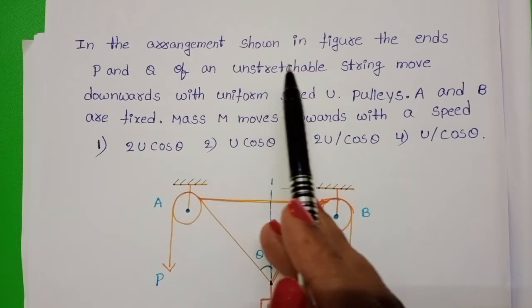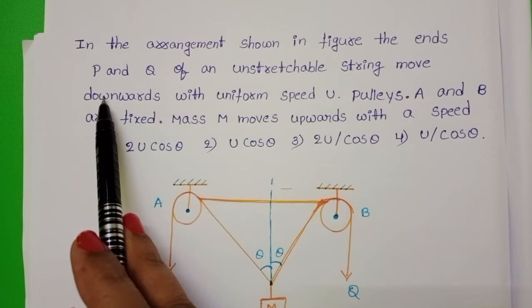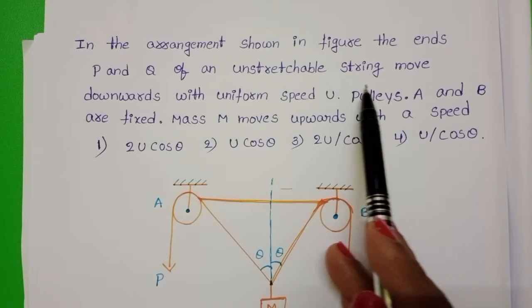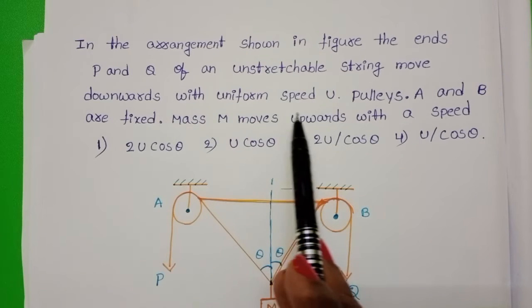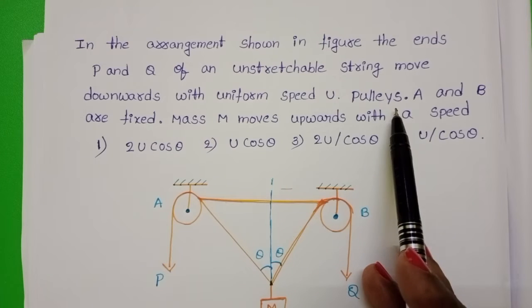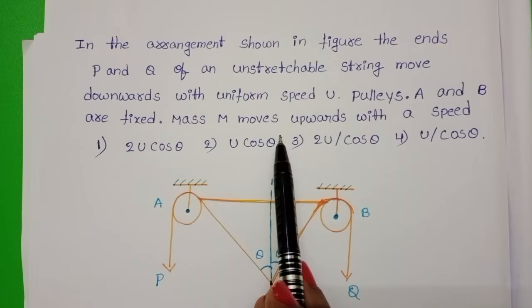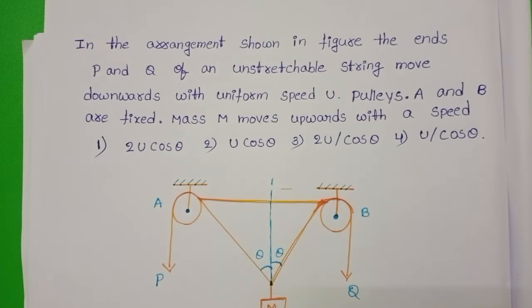In the arrangement shown in figure, the ends P and Q of an unstretchable string move downwards with uniform speed U. Pulleys A and B are fixed. Mass M moves upward with a speed.